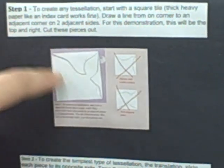Your steps to create your tessellations are shown right here. To create any tessellation, you need to start with a square tile. Draw a line from one corner to an adjacent corner on the two adjacent sides. Then you need to cut these pieces out, as shown right here. You draw these lines right here, then you cut them out.